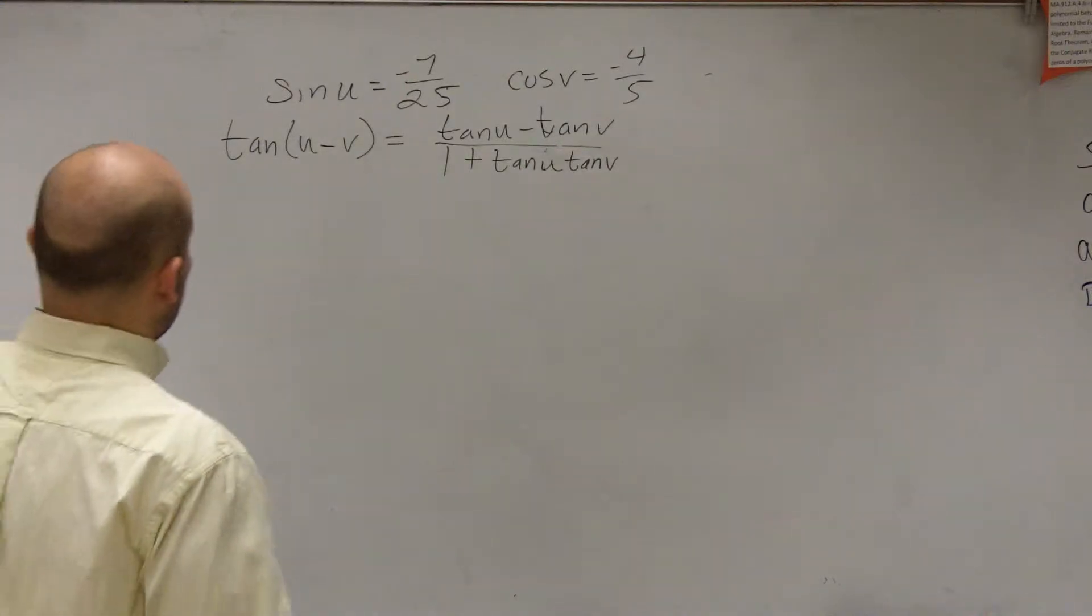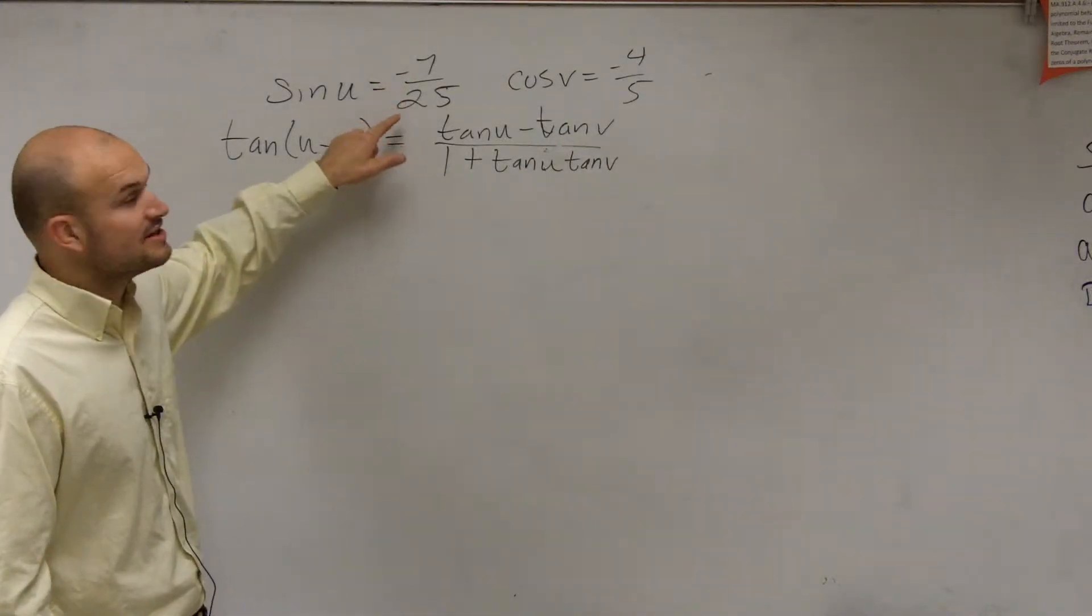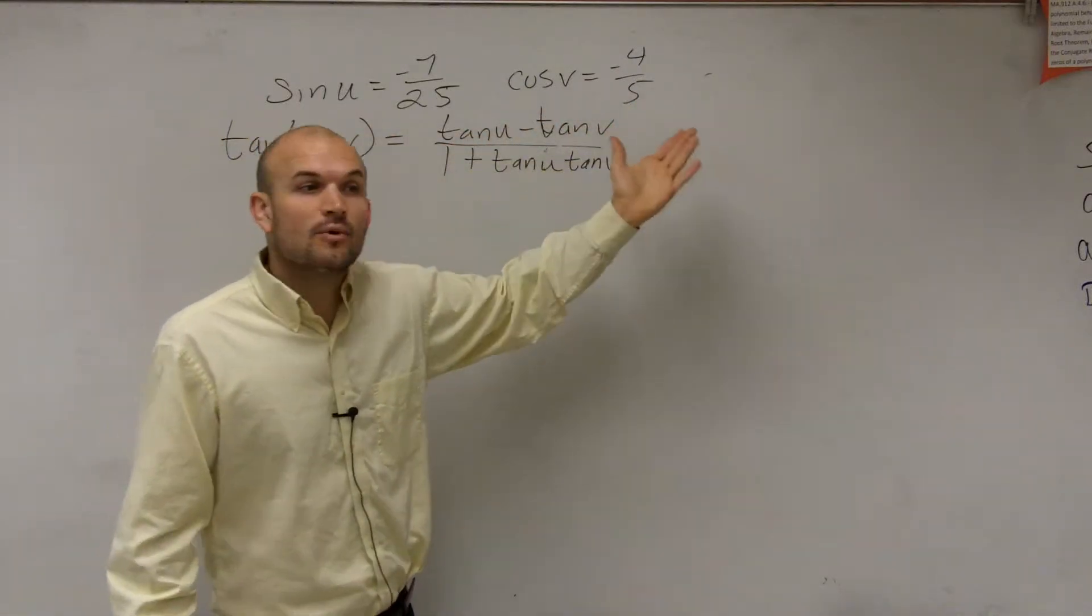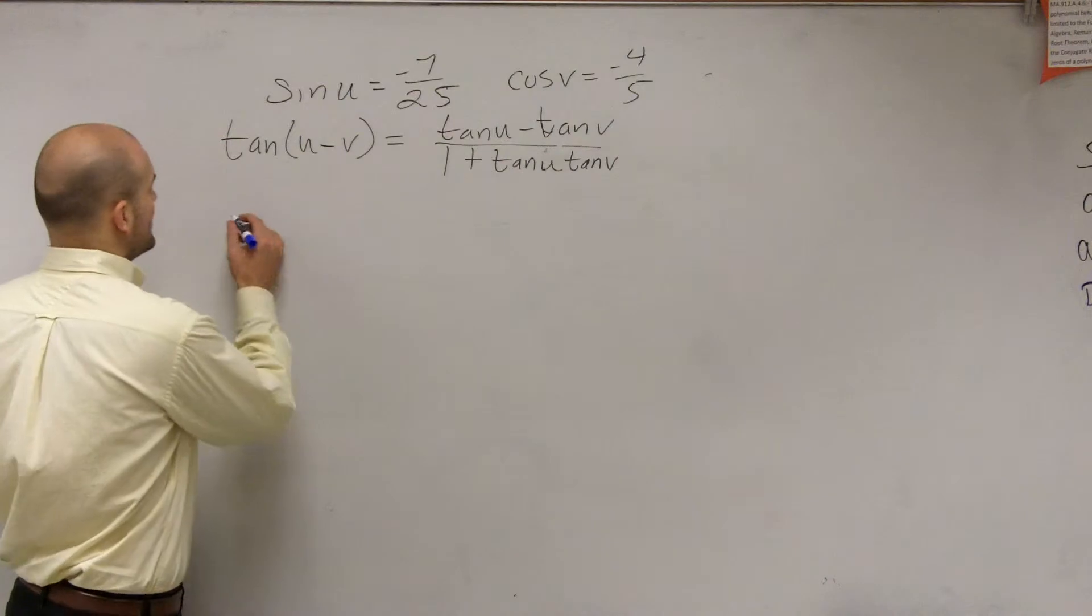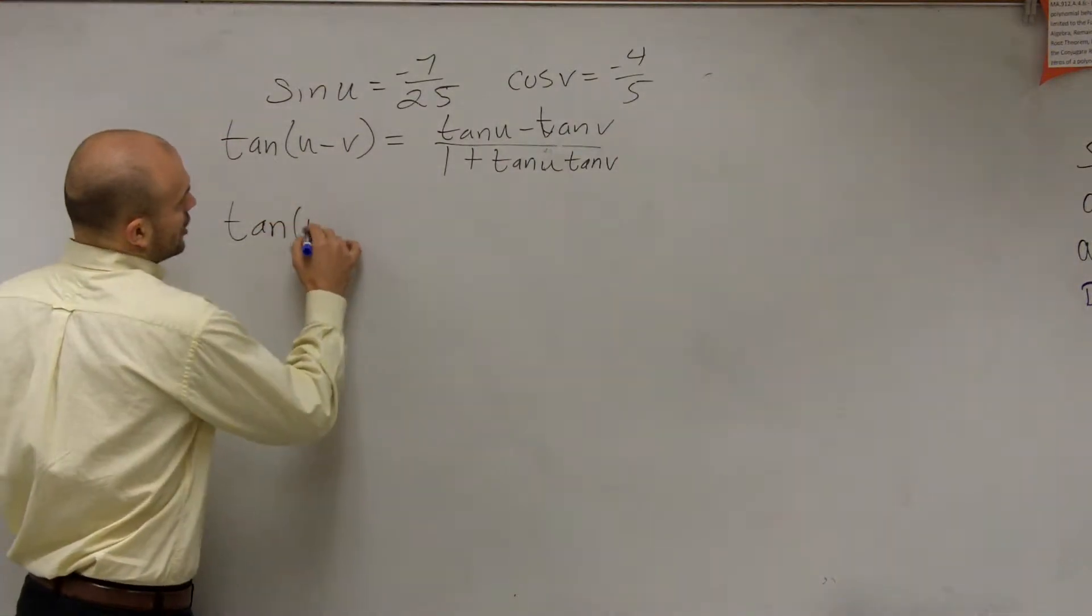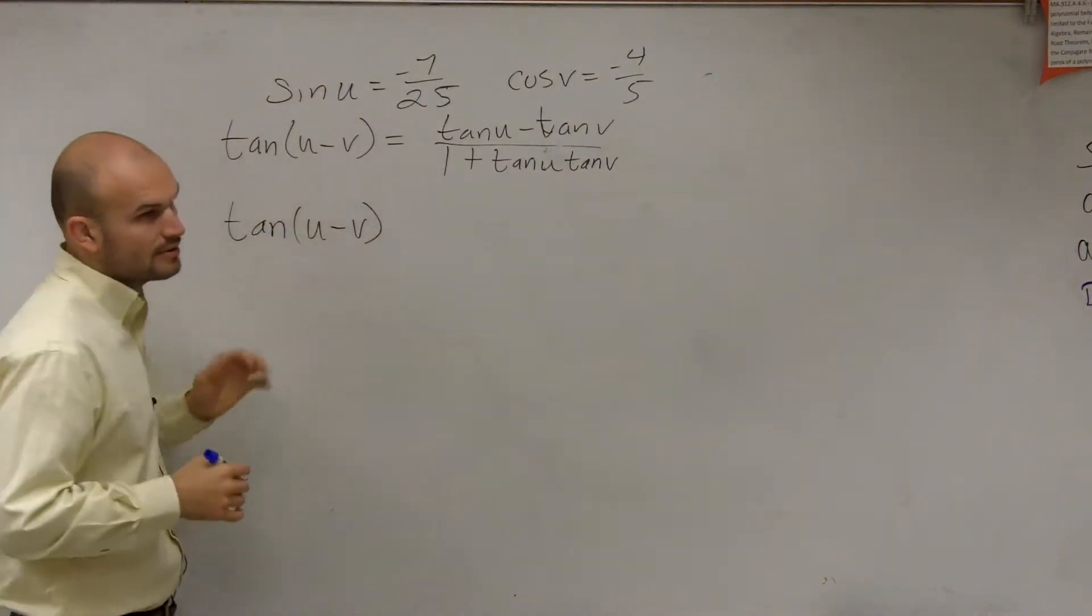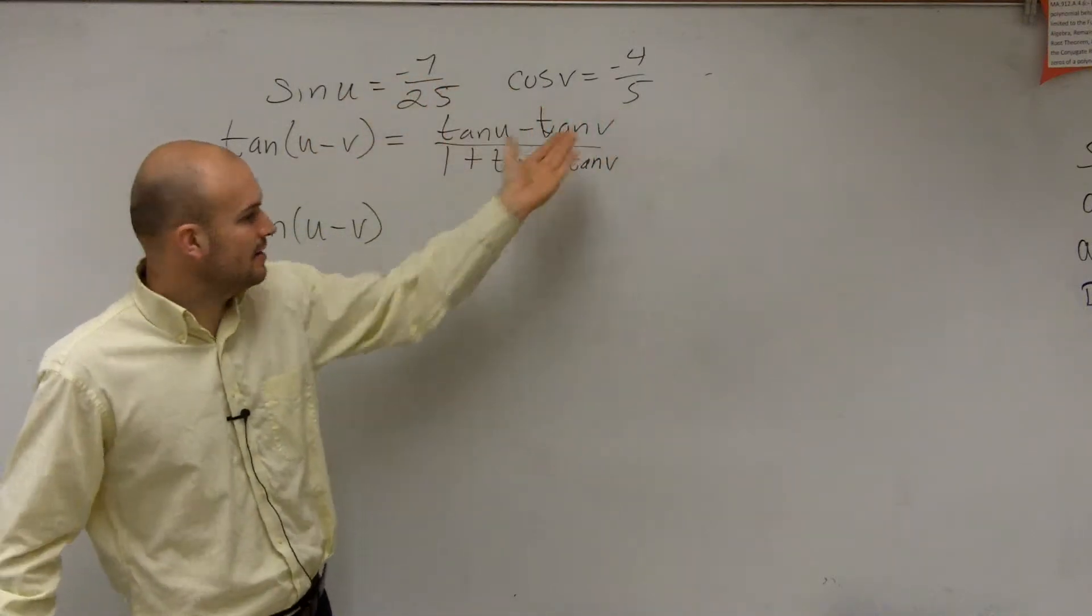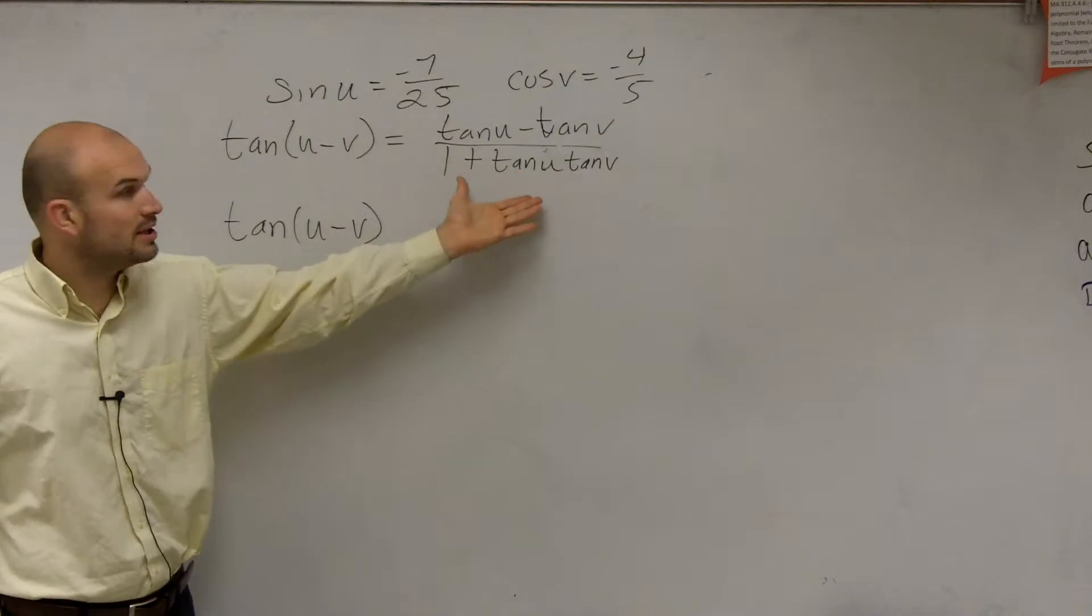OK, so what I have is sine of u equals negative 7 divided by 25, and cosine of v equals negative 4 over 5. What they're asking us to do is determine what the tangent of u minus v is. So we have the sine of u and the cosine of v. They want us to find the tangent of u minus v by applying this formula.